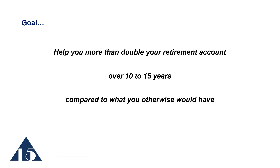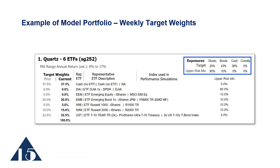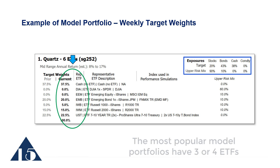This is a screenshot of one of the model portfolios. The green ellipse shows the ETFs on the right side of the ellipse, and on the left side are the target weights that are appropriate for this particular model portfolio.